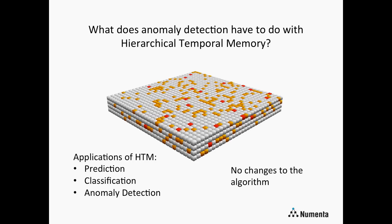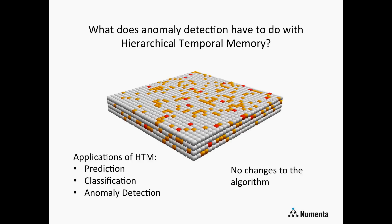What does this have to do with the broader HTM theory? With the temporal memory, we have sets of cells organized in columns, and between those cells are connections that allow the system to make predictions about what's going to happen next. In addition to prediction and classification problems, we can use these for anomaly detection. Importantly, this doesn't require any changes to the temporal memory algorithm — no new data structures or alterations needed. We can simply inspect the state of the temporal memory to compute the anomaly score.